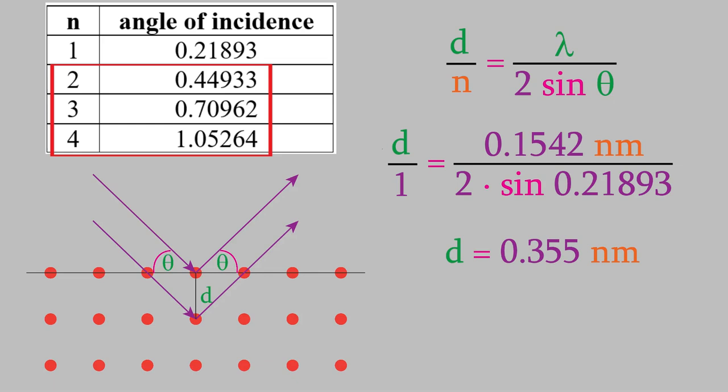The example we just did was for the simplest possible kind of crystal, in which the atoms in each layer are directly above the atoms in the next layer. That's hardly ever the case in a real crystal. And the real situation makes the mathematics much more difficult, although the general idea is still the same.